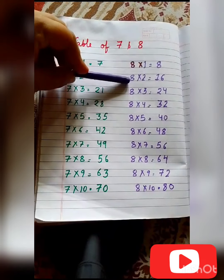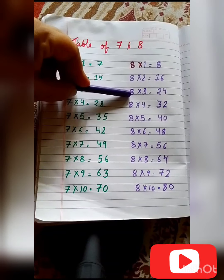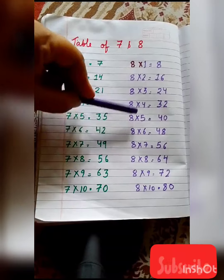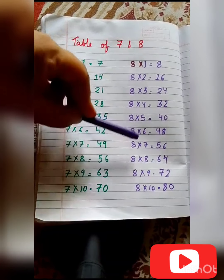8 ones are 8, 8 twos are 16, 8 threes are 24, 8 fours are 32, 8 fives are 40, 8 sixes are 48.